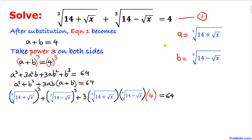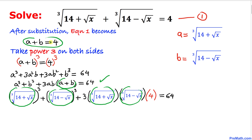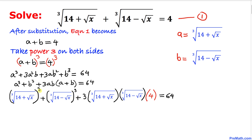Now I'll substitute back the values of a and b. a³ is (14 plus square root of x), b³ is (14 minus square root of x), and since a plus b equals 4, I replace that with 4. The cube and cube root undo each other, so we simply get 14 plus square root of x plus 14 minus square root of x.